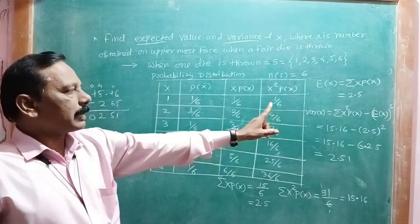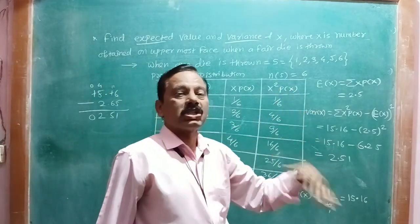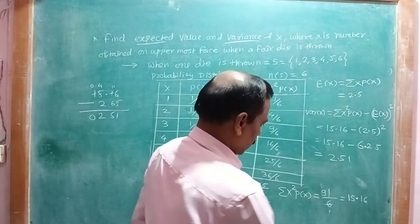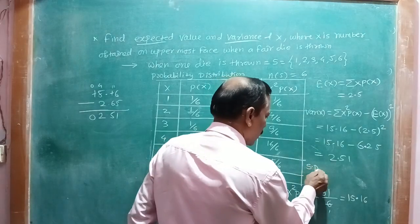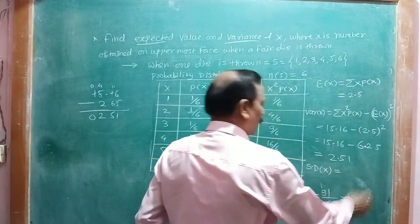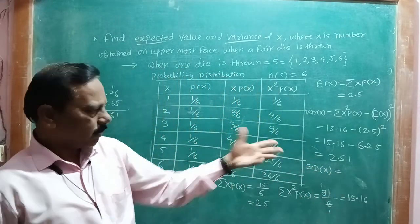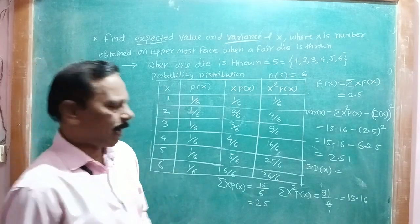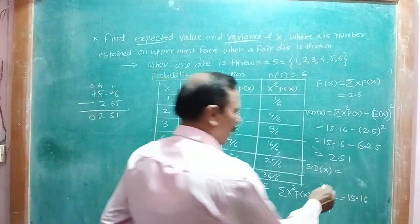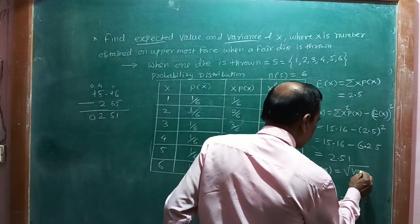If you need the standard deviation SD(X), it is the square root of the variance of X. So SD(X) = √Var(X).